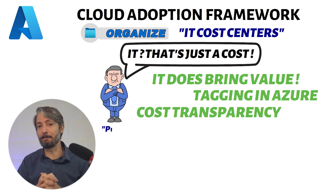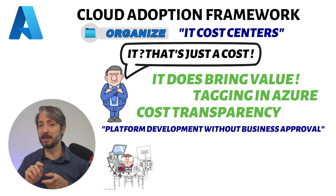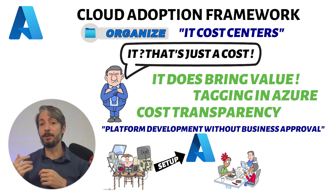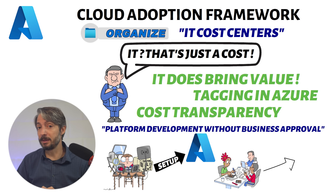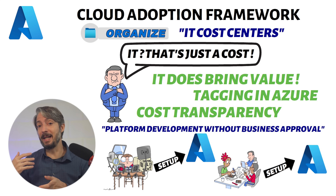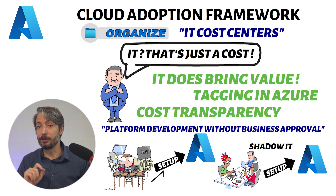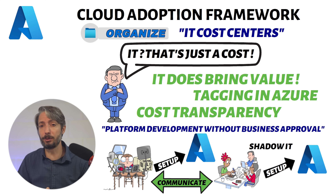The next anti-pattern is platform development without business approval. This is where the IT department sets up a platform without involving the business units. You may end up with a platform where business unit developers don't have the permissions they need, don't have access to the resources, and start doubting the new platform. What happens then? The business unit developers buy their own Azure subscriptions and set up their own environment — also referred to as shadow IT. So avoid working in IT silos and involve developers and technical decision makers to ensure the platform is usable for the business.